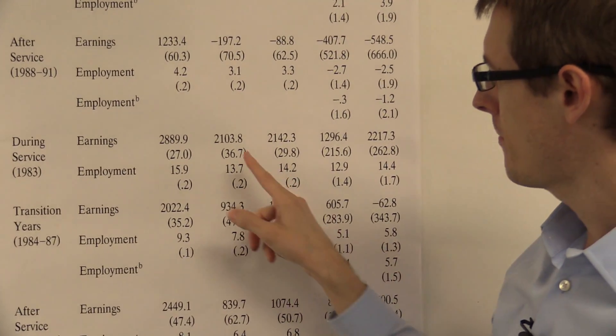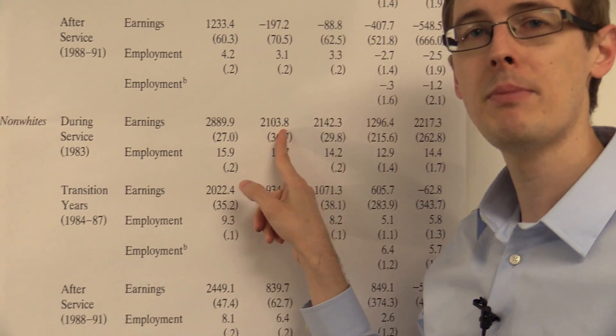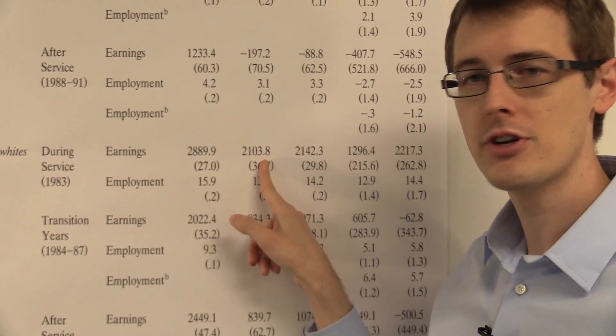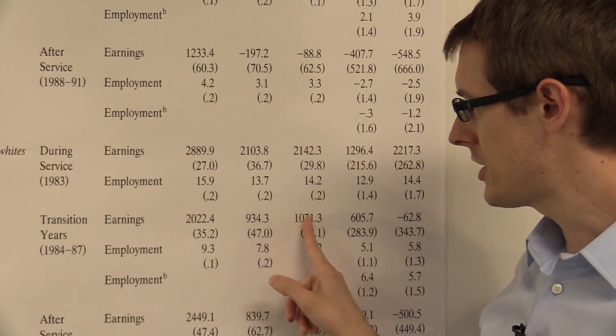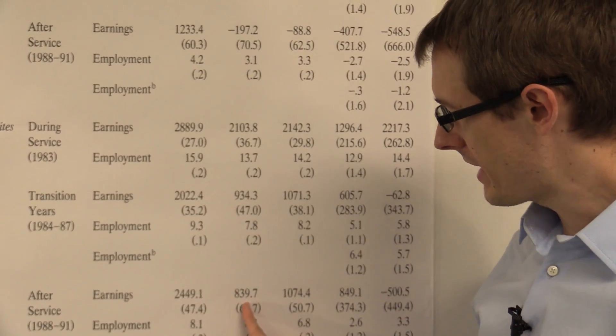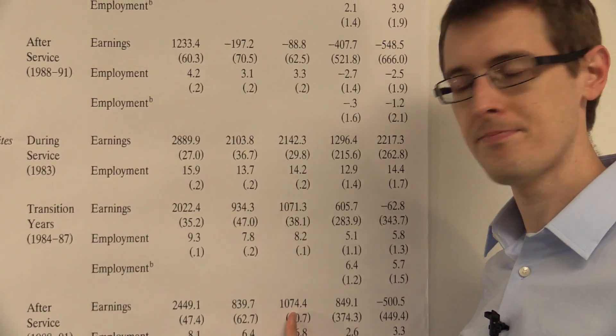For non-whites, however, we still see positive effects. During service, we get a large $2,100 effect. For transition years, about a $1,000 effect. And then after service, about $800 or $1,000.